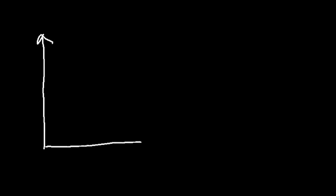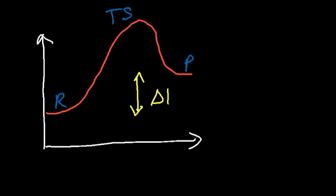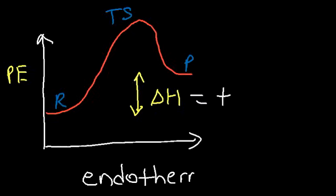Now let's draw a typical potential energy diagram for an endothermic reaction. Here we have the reactants, the products, and on top we have the transition state, also known as the activated complex. Delta H, the enthalpy of the reaction, is the difference between the potential energy of the products and the reactants. Because the products have more energy than the reactants, delta H is positive, so this reaction is endothermic.